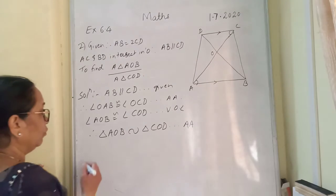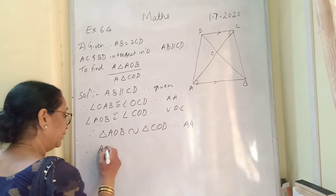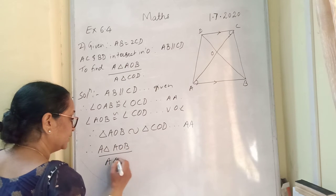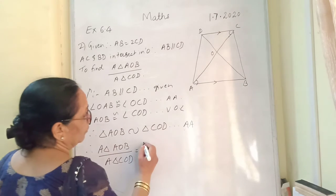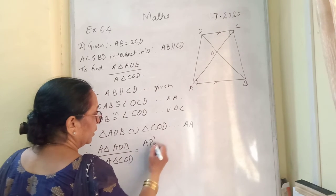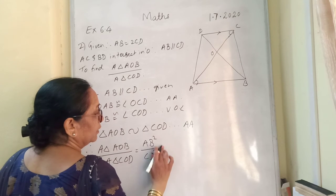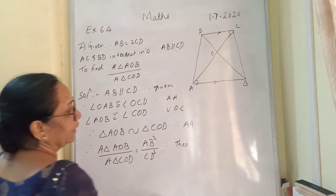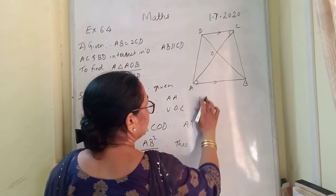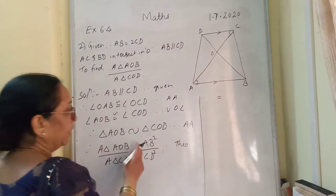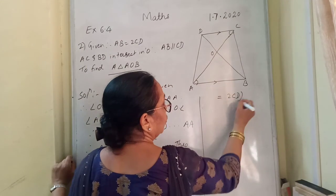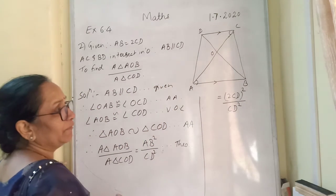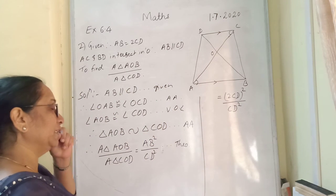Therefore, area triangle AOB upon area triangle COD is equal to AB square upon CD square. The reason will be theorem. Now, that is equal to, now AB is equal to 2CD whole square upon CD square, because it is given to us that AB is equal to 2CD.